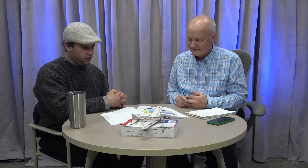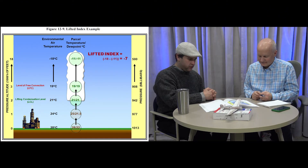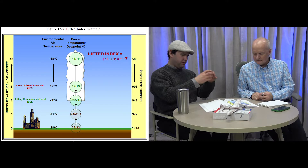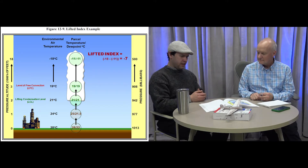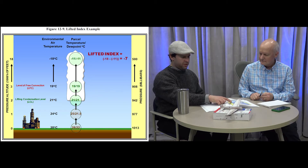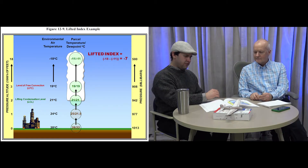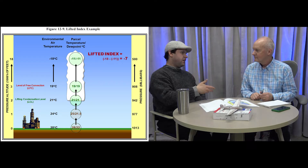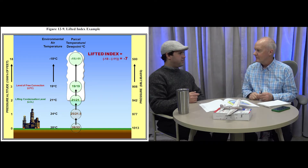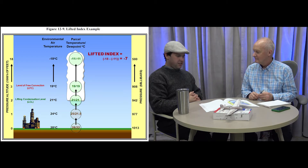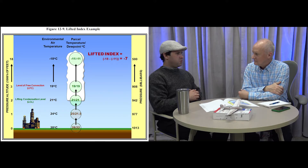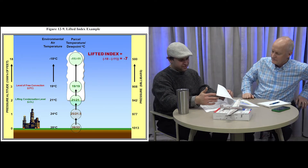Figure 12-9 covers the lifted index. A negative lifted index means more unstable air; a positive value means more stable. Anything above zero tends to be smoother and less bumpy — good for most passengers but bad for glider pilots, who prefer thermals and unstable air to stay aloft. Gliders like the mountains for that reason.